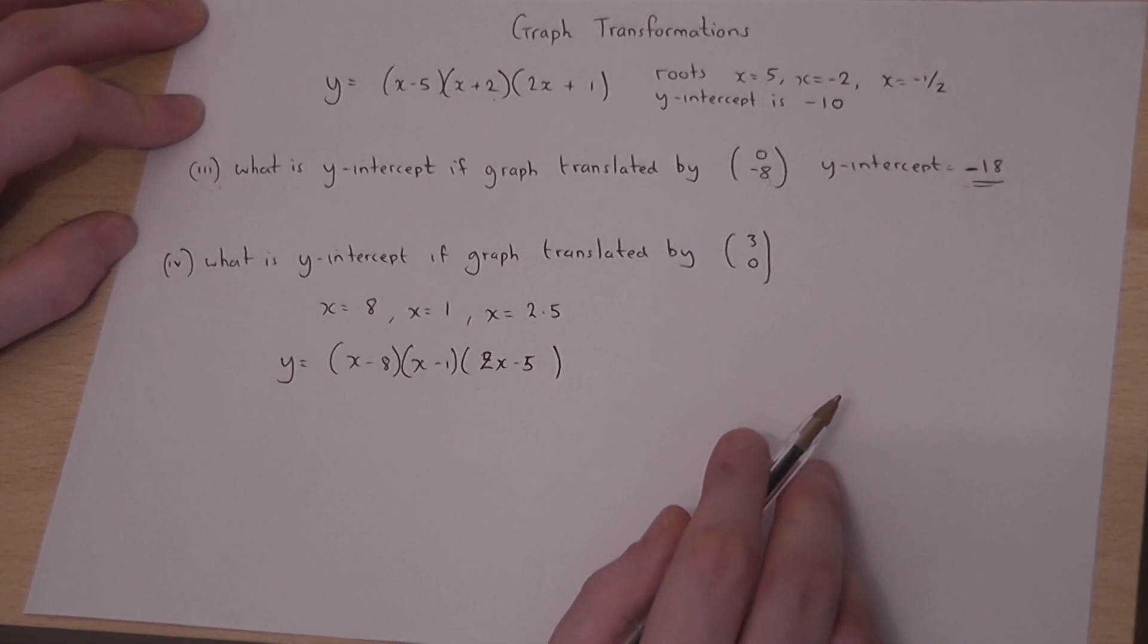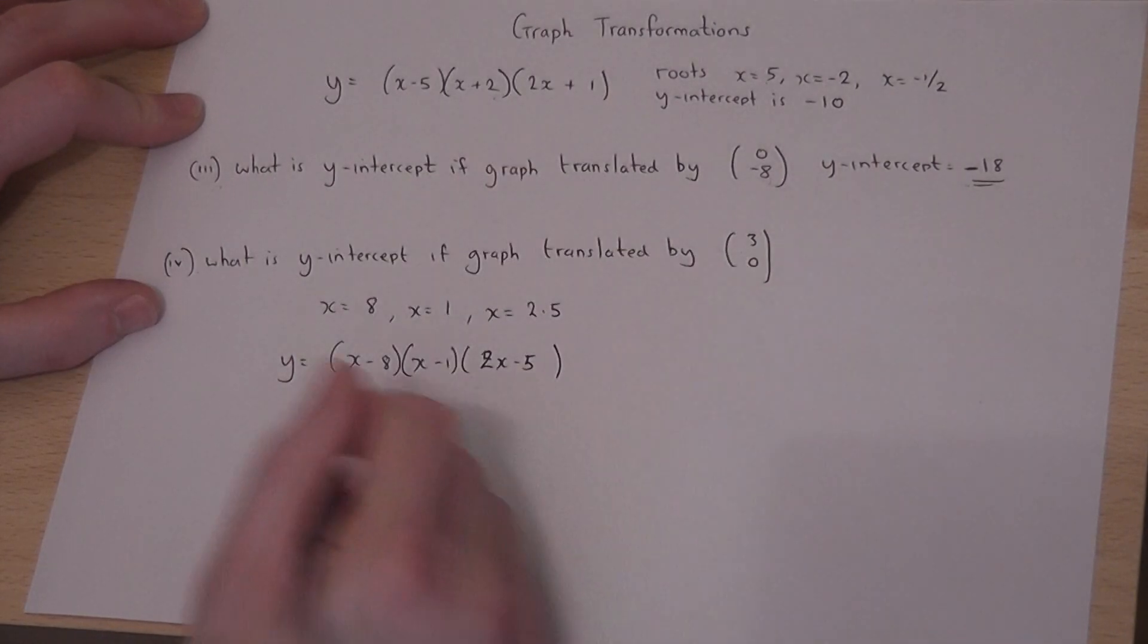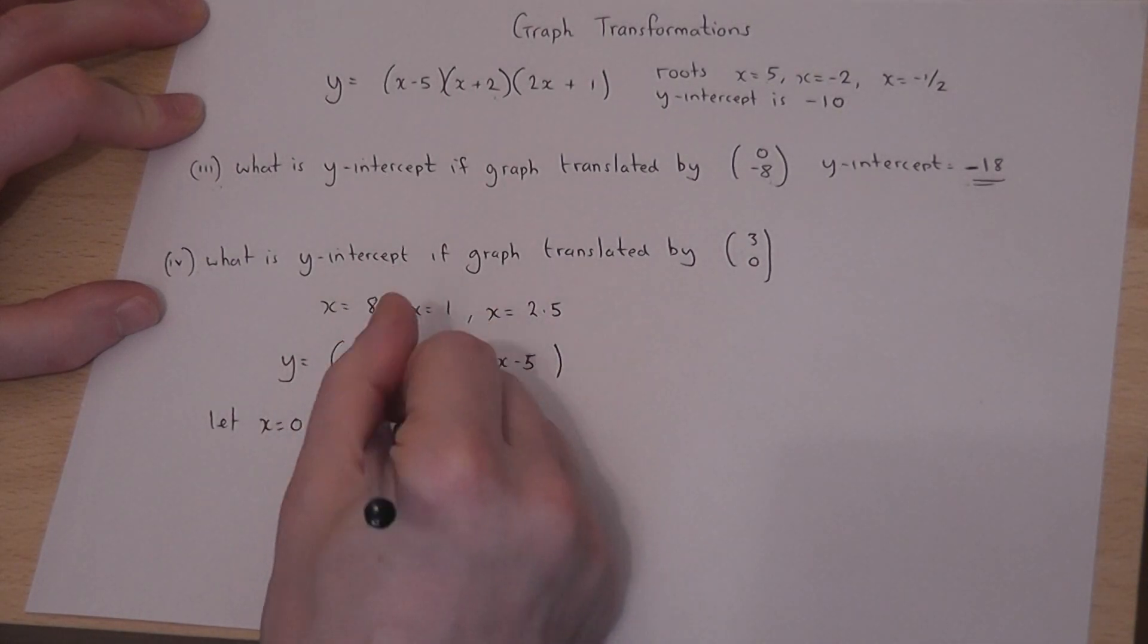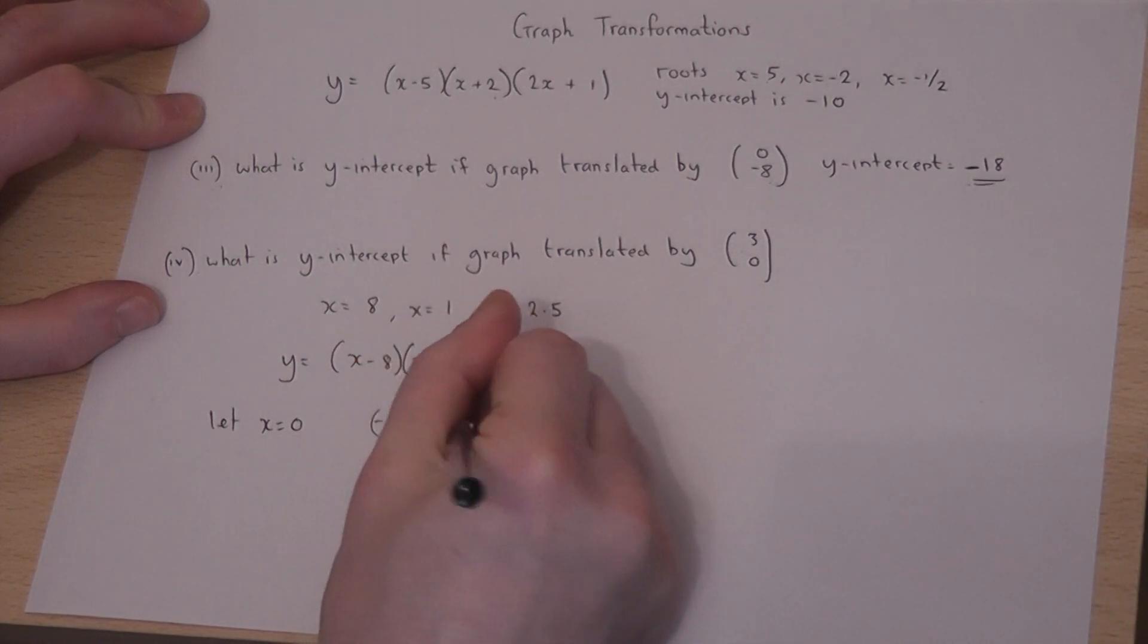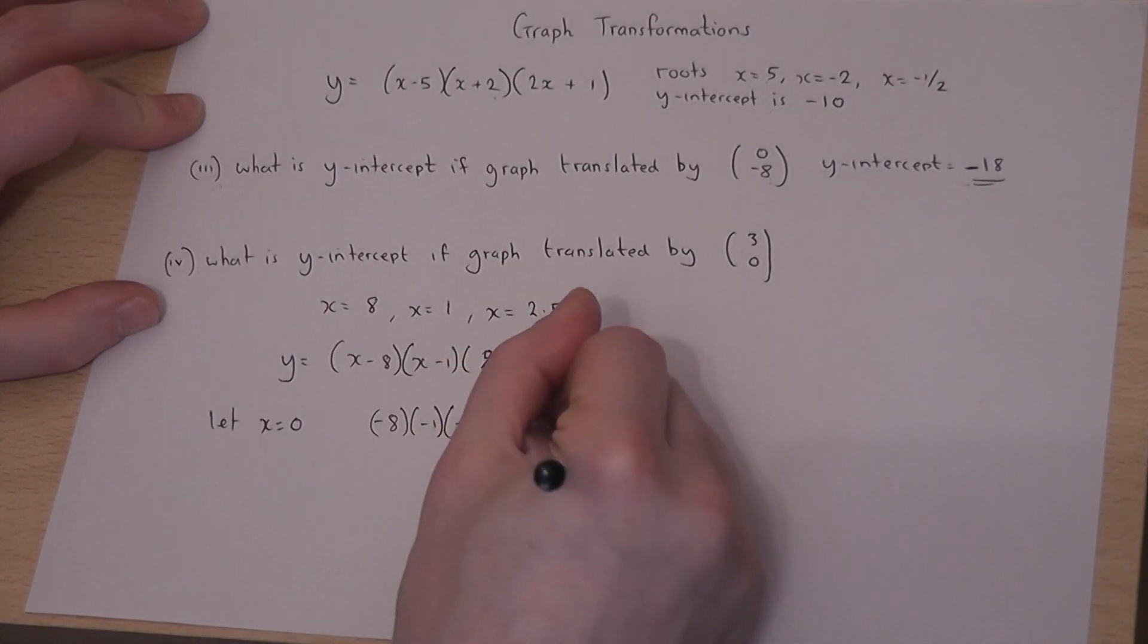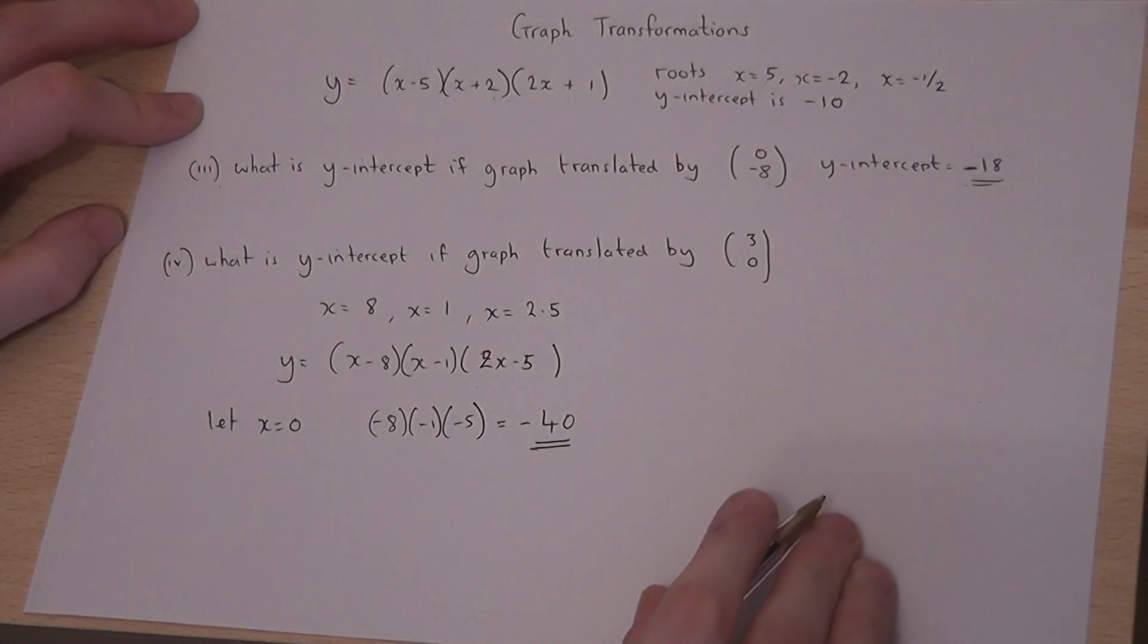Therefore to find the y-intercept, I just need to let x=0. So it becomes -8 times -1 times -5, and if you multiply all these values together you get the answer -40. So the y-intercept is -40.